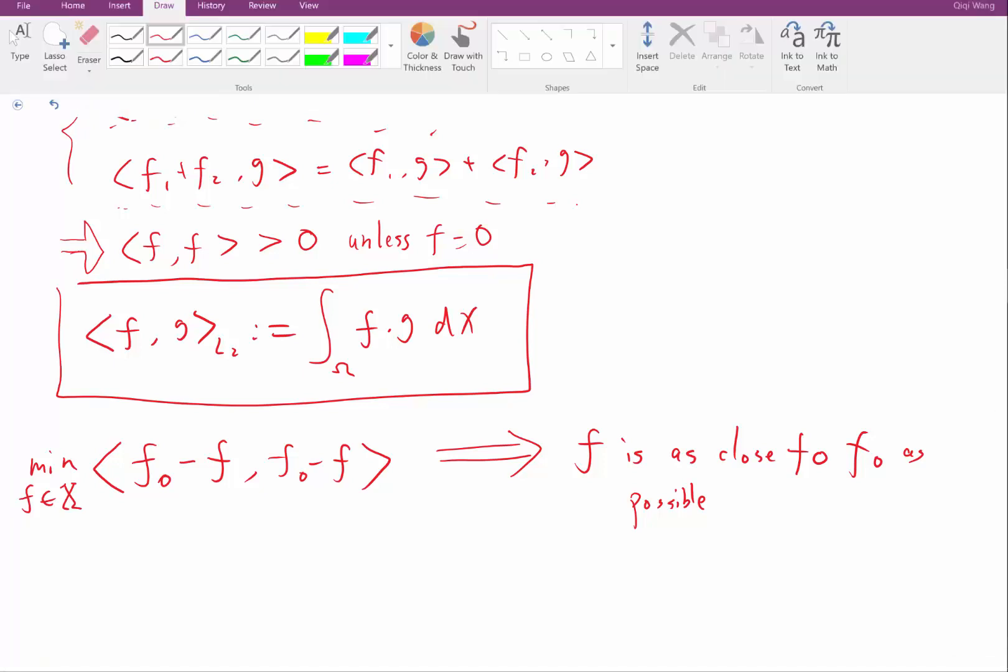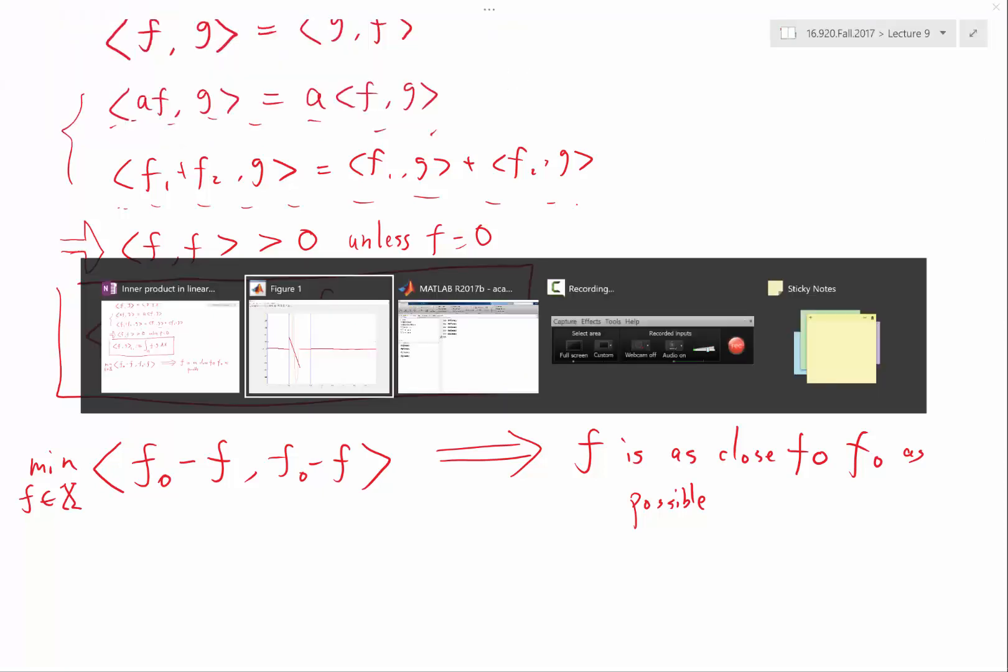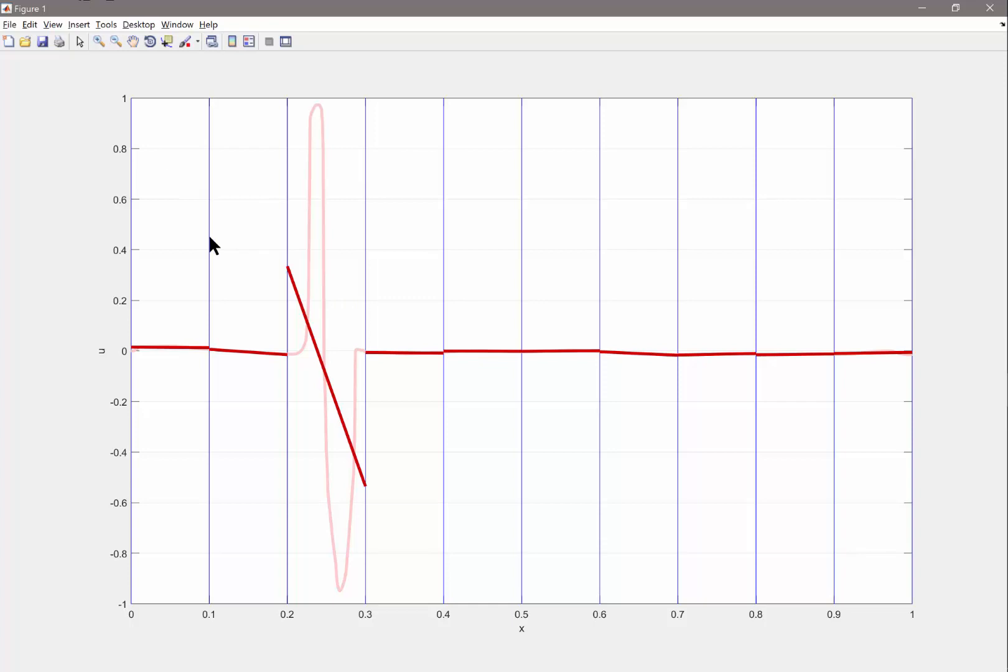Now maybe we can start to understand a little bit of the previous example I have given in MATLAB. Ignore all the other elements for now. Just look at the single element between point 2 and point 3. Within that element, you can kind of guess what kind of a linear space I have over here. It's actually exactly the same linear space as I gave as an example a little bit earlier. Within that element, I'm looking at all functions that are a straight line. And what I'm constructing here is basically within all functions that are a straight line, the single function that is as close to this wiggly function, which is far from a straight line, as possible.